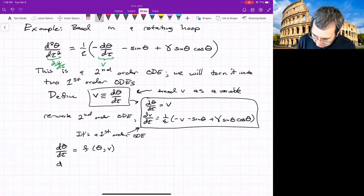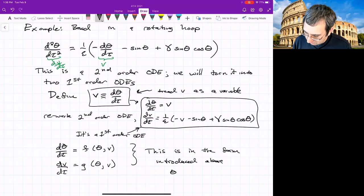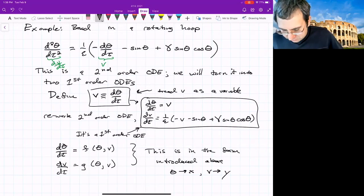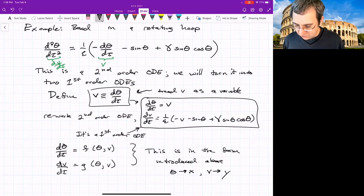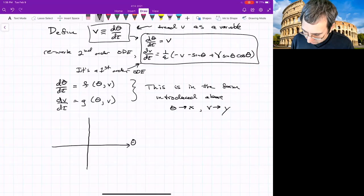And now we have something that looks like if we treat, if we write this as d theta d tau equals F of theta and V, d V d tau equals G of theta and V. And this is in the form that we introduced above. If you want, instead of theta, put X. Instead of V, put Y. And it looks the same. And F is just V. So it's particularly easy. So we could even try to sketch what the vector field is.